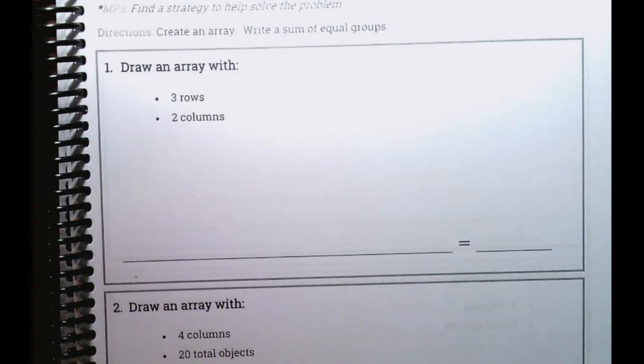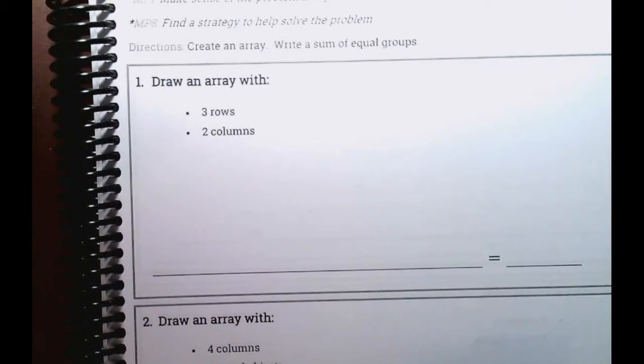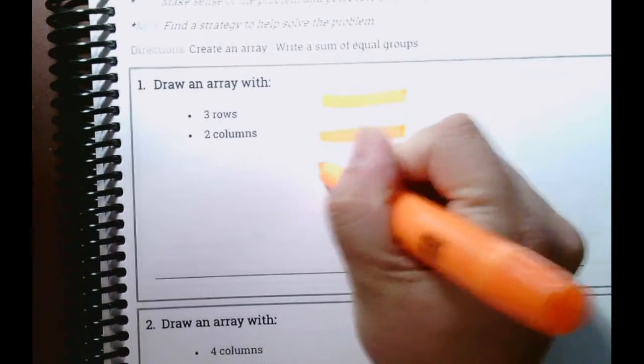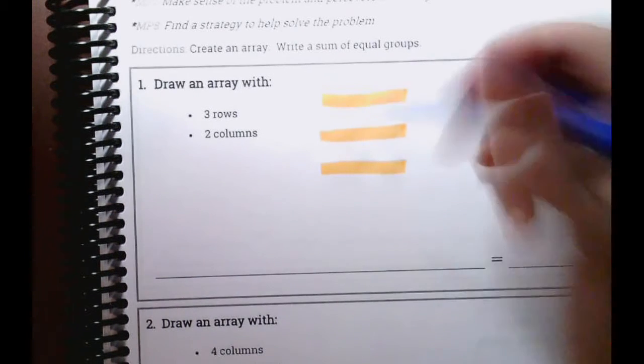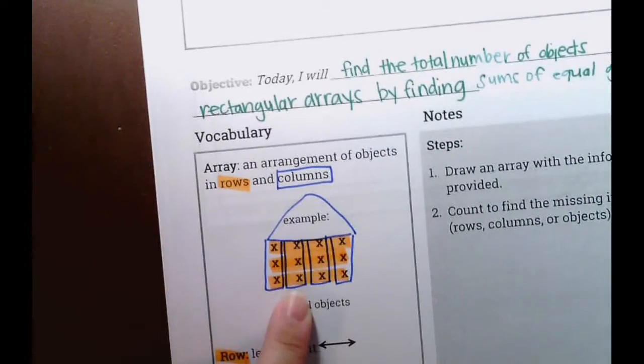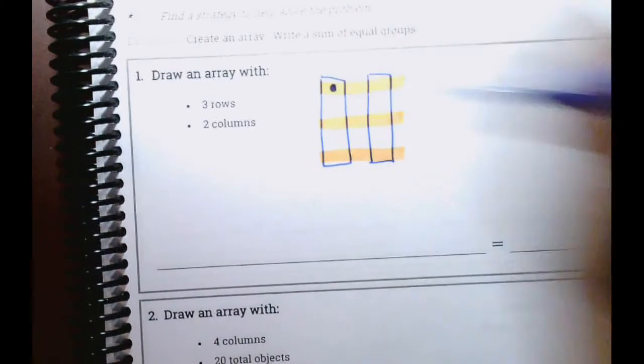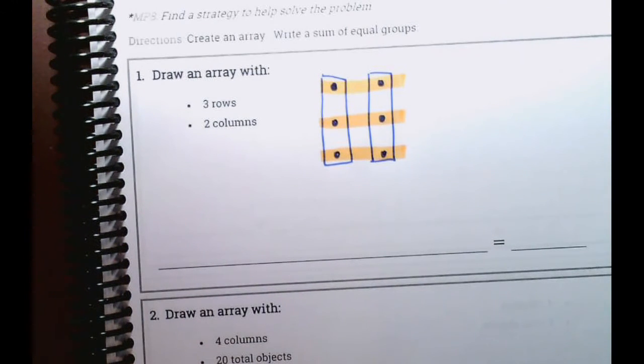Okay, so I know that rows go what? Left to right. And we highlighted rows with orange. So I'm going to take my orange. Okay. And I'm going to draw three rows. One, two, three. Okay. And then I'm going to take my blue and draw in my columns. There are one, two. Okay, just like our array here, in each of the sections, there's an X. In this case, let's draw dots. So wherever the orange and the blue meet, you're going to have a dot. So here's one, two, three. One, two, and three.